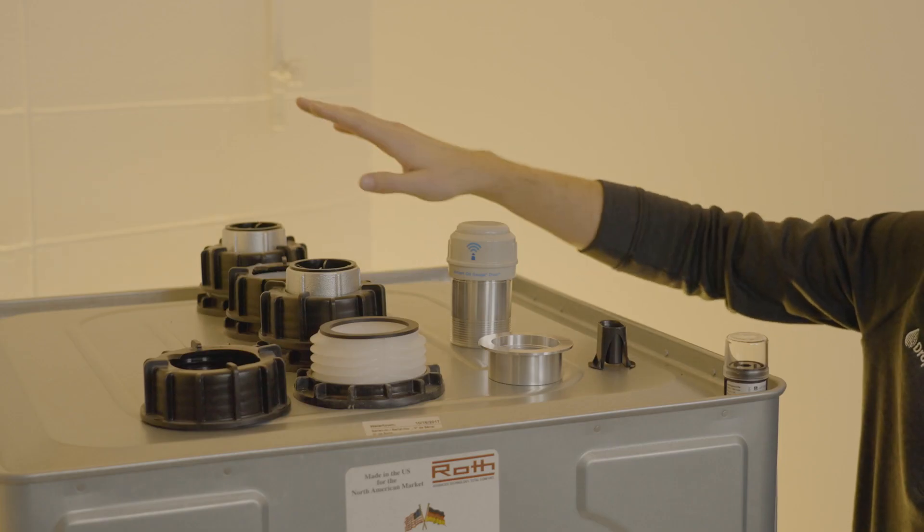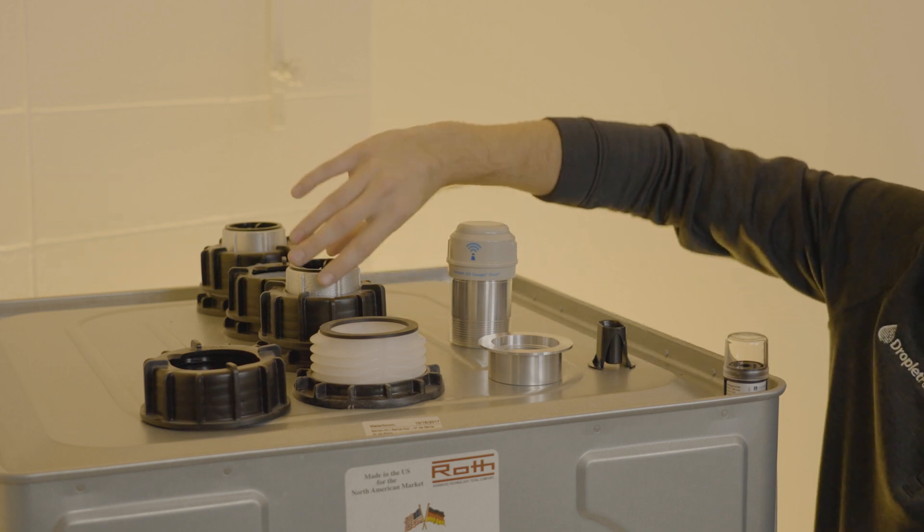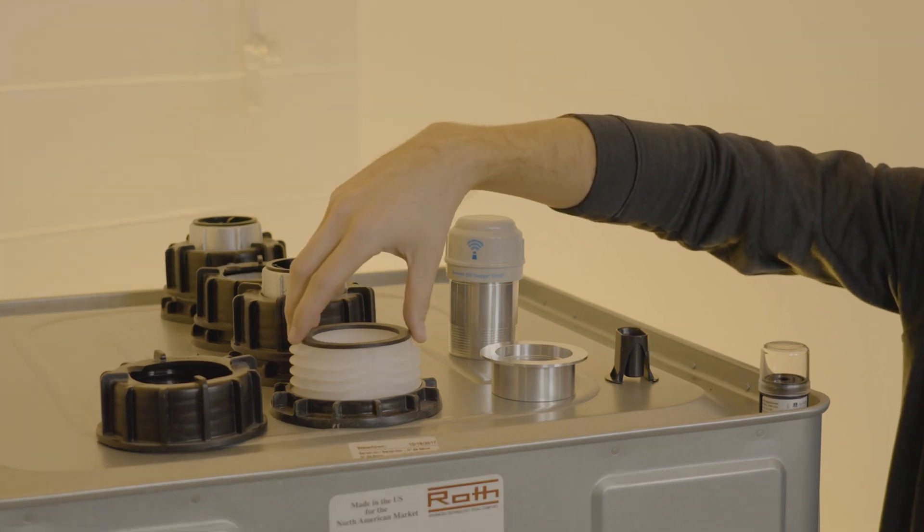You'll have your fill pipe, you'll have your vent pipe, you'll have another opening where the oil lines will go to your burner, and then this final opening will be where your float gauge is currently.